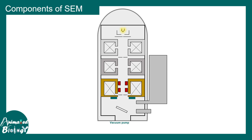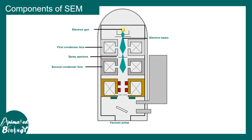Now let's look at the optical components. SEM looks pretty much like an inverted tube — it is basically a vacuum chamber where the entire microscope, lenses, and electron gun are placed. First, you would see the electron gun, which is the source of electrons. Similar electron guns are used in TEM as well — for more details, watch the TEM video. The electron beam generated passes through several lens arrays, including a couple of condenser lenses and a spray aperture.